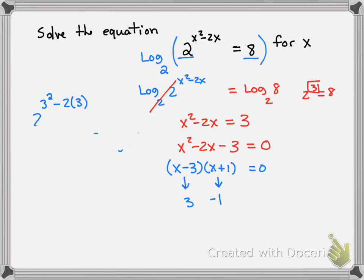Now I'll check the other one. I also have 2 to the negative 1 squared minus 2 times negative 1. Well that's equal to 2 to the 1 plus 2, or 2 to the 3rd. That's equal to 8. So both of these solutions are correct. Neither is extraneous.